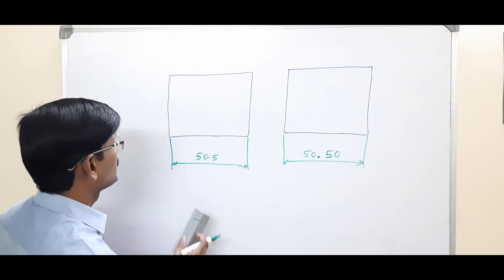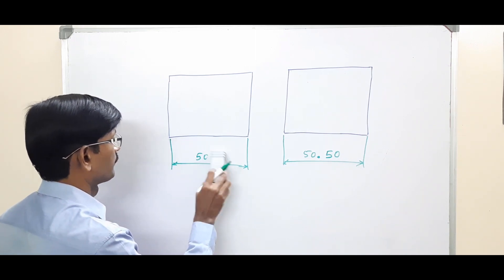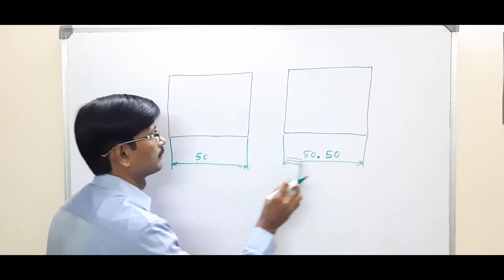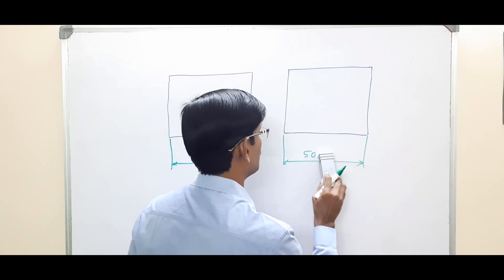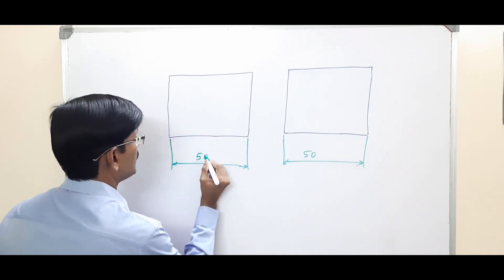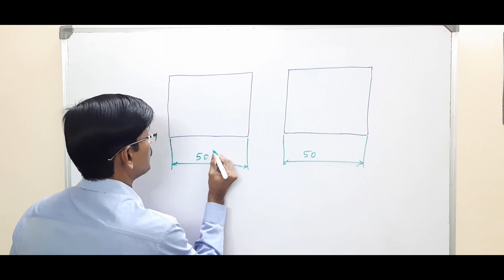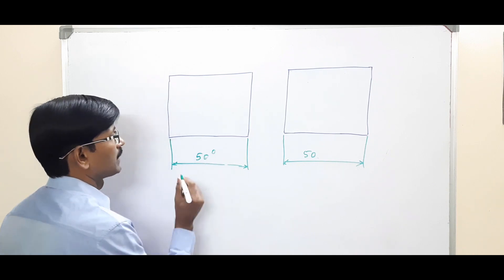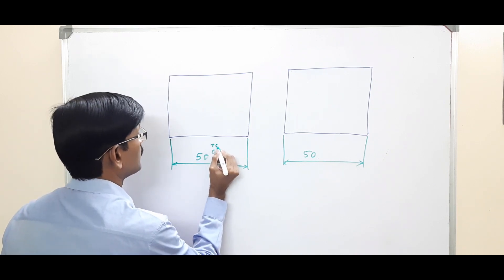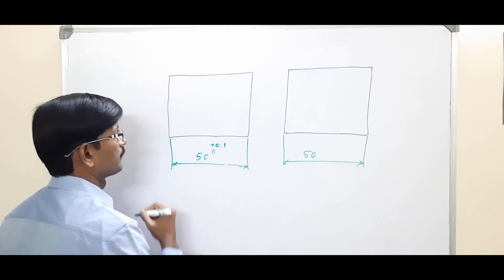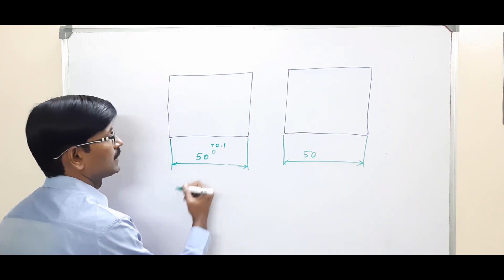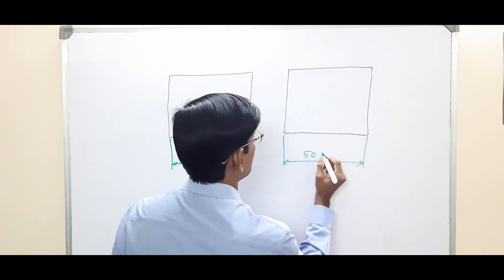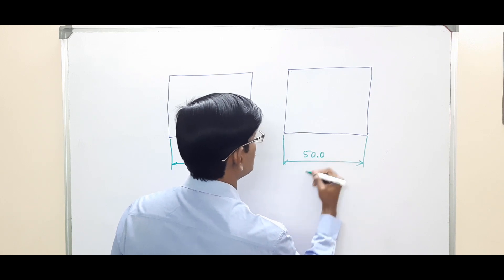Then what we have is when it is a unilateral tolerance. For unilateral tolerance, we put a 0 without plus or minus sign, then the tolerance value.